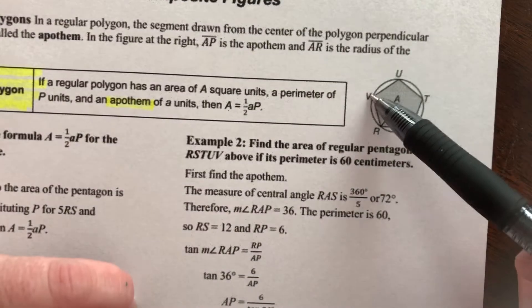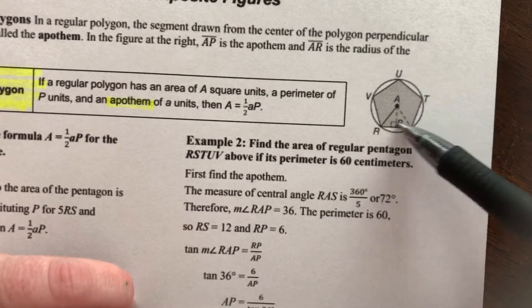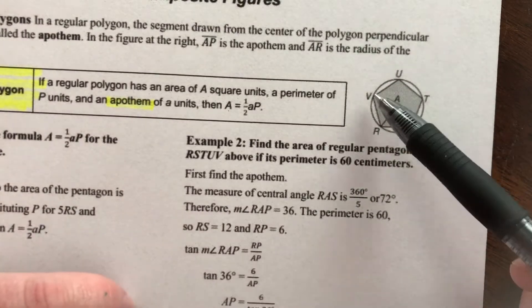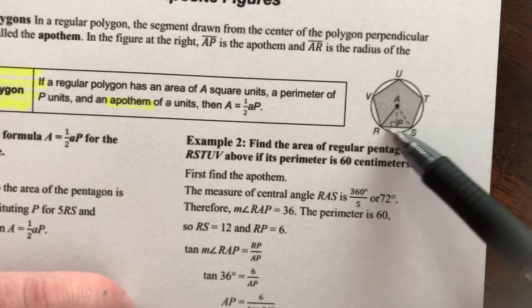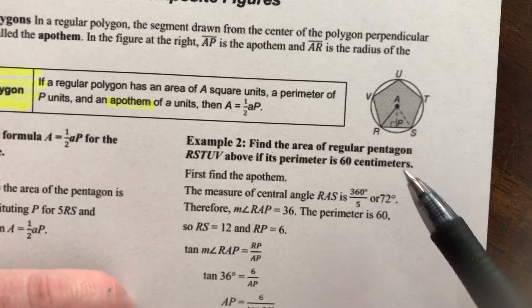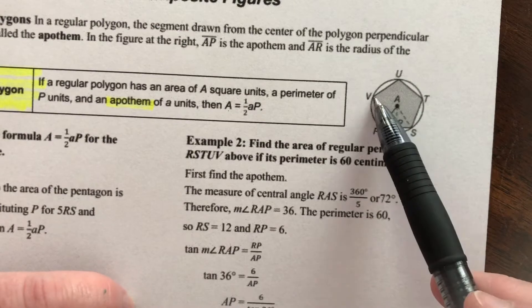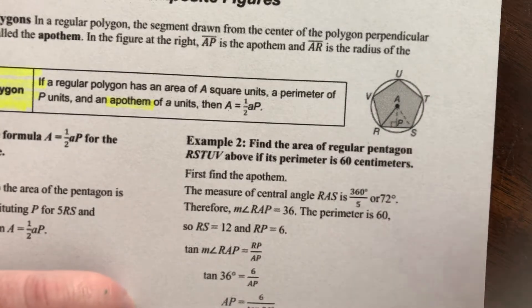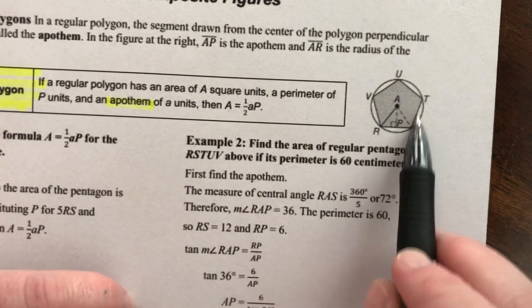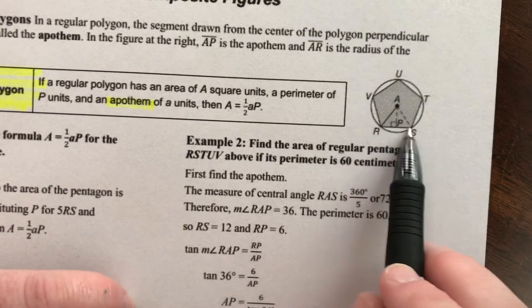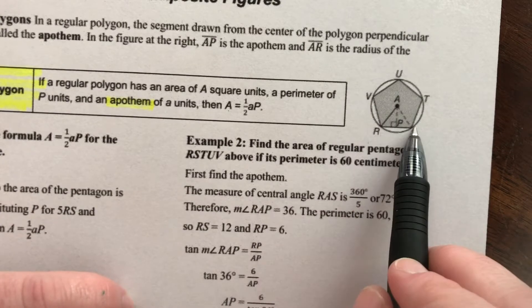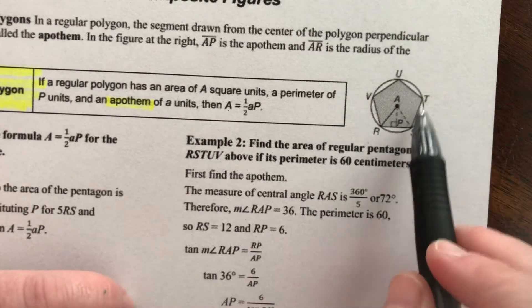A polygon is a closed two-dimensional figure made up of straight sides. If it's a regular polygon, it means that all of the sides are equal length — they're congruent. We're looking at this pentagon here. The perimeter is the distance around the outside. If we know the length of one side, we just multiply it times however many sides there are, because in a regular polygon they're all the same length.